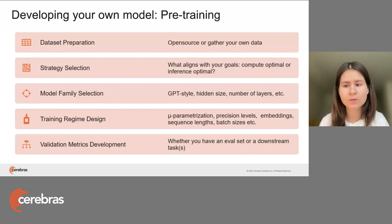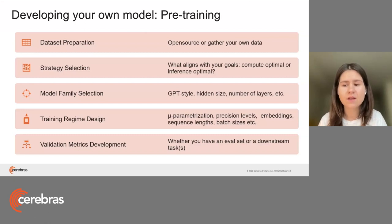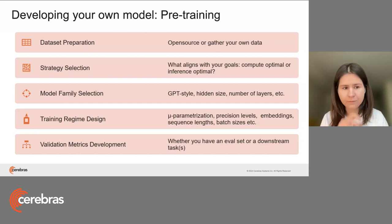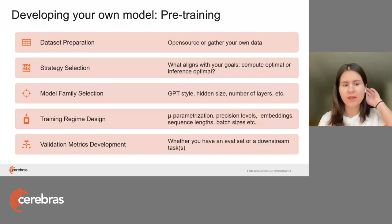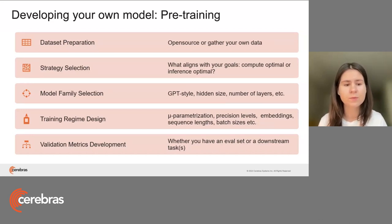The next stage is deciding which strategy to go with — whether you want to train the compute optimal model or the inference optimal model. Most people here would want the best model at downstream task performance, so I would advise using the inference optimal model versus compute optimal. However, if you're doing research on how to optimize training of large language models at the pre-training stage, I advise using compute optimal because you can iterate faster and explore hypotheses to derive the inference optimal schedule.